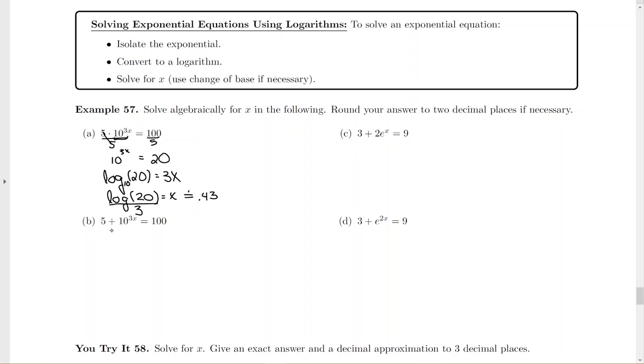For letter B, I need the exponent by itself. It's got an addition sign here, so I'm going to have to use addition subtraction property to get rid of the 5. Since the 5 is positive, you'll want to subtract 5 from both sides. Notice how that's different from part A. So I have now 10 to the 3x equals 95.